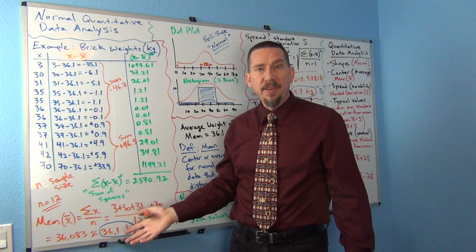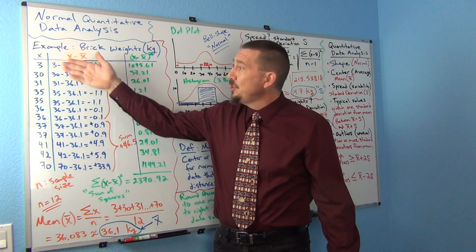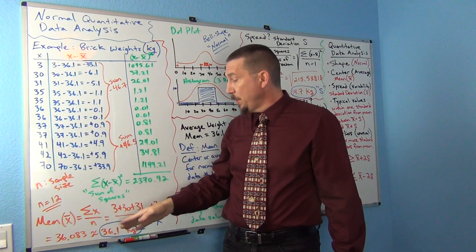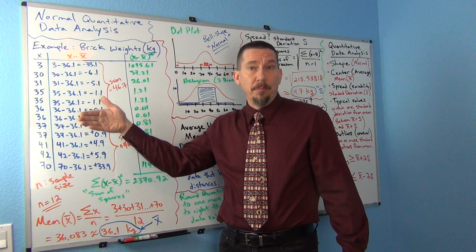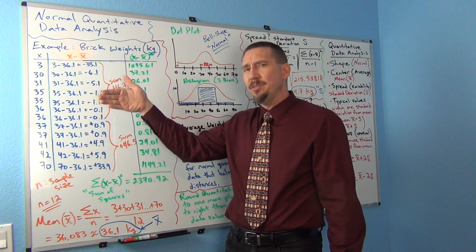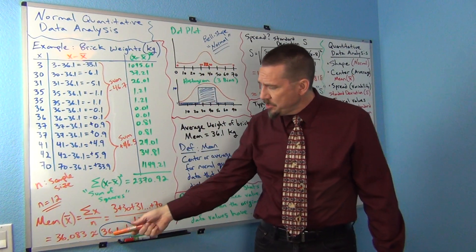If my original data had two numbers to the right of the decimal, then I would round my mean to the third number to the right of the decimal. Does that make sense? So one more place value than the original data.